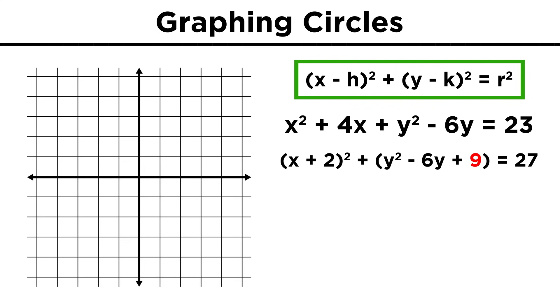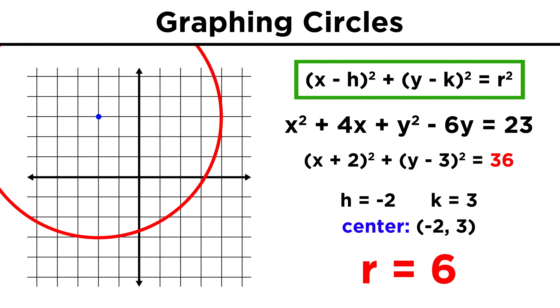We can also see that for the y terms, we have to add nine, again making sure to add to the other side as well, and again we have a perfect square, which allows us to express this as (y minus three) quantity squared. Add up the numbers on the right, and we've got a circle in standard form, with its center at negative two, three, and with a radius of six.